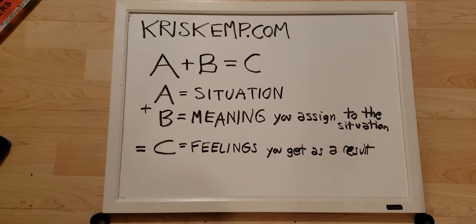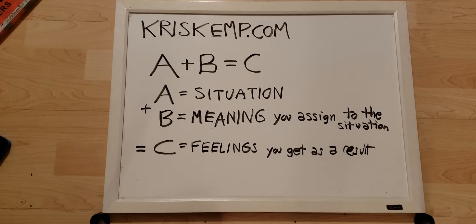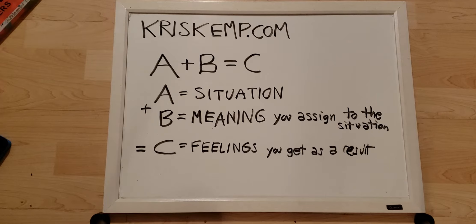A plus B equals C. A equals the situation. B is the meaning you assign to the situation, and C are the feelings you get as a result of A plus B. You can use the ABC method to gain new perspective on a current situation, to shed light onto a circumstance and gain clarity. With that clarity you can see the situation from an entirely new perspective, and these strategies will empower you to find a remedy for that situation much quicker.